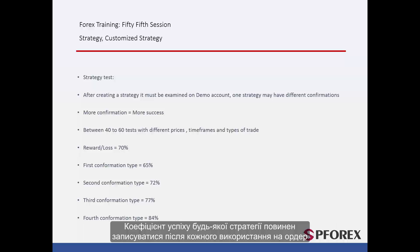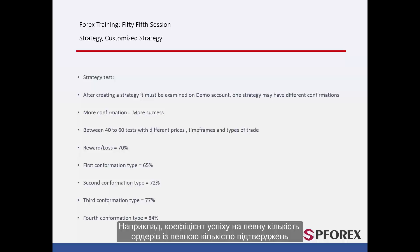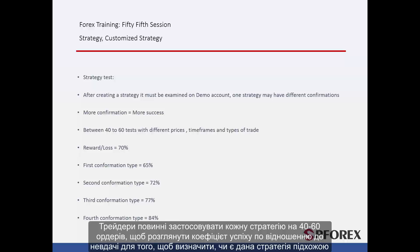The success coefficient of any strategy should be recorded after each utilisation of an order — for example, the ratio of success on a certain number of orders with a specified amount of confirmations. Traders should apply each strategy on 40 to 60 orders to consider the ratio of prosperity against failure to determine if the given strategy is suitable.